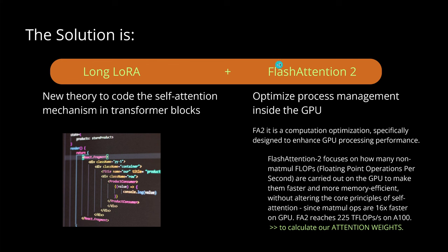If you reduce the number of non-matrix-multiplication operations in calculating self-attention, you get dramatically faster computation, because those non-matmul FLOPs are 16 times slower to compute — the whole GPU is optimized for tensor algebra, and anything outside that is 16× slower. With Flash Attention 2, we reach a new speed limit of 225 teraflops on an NVIDIA A100, just for calculating the attention weights. So Flash Attention 2 is really focused and fast.